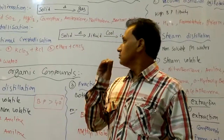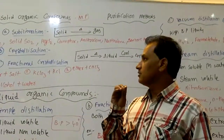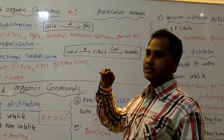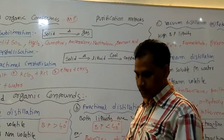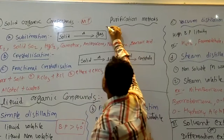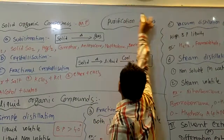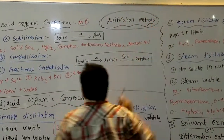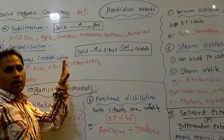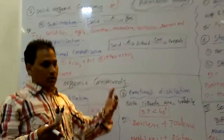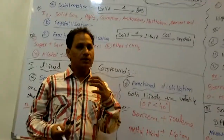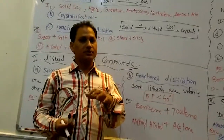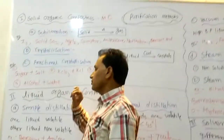In the easy method to remember the examples of purification methods, purification methods are also important for counted examples. The last question is from purification methods. Organic compounds contain impurities in the form of solid impurities and liquid impurities — mostly organic compounds contain both solid and liquid impurities.